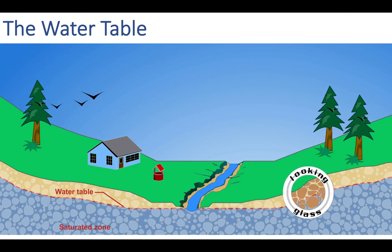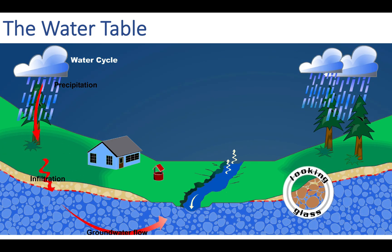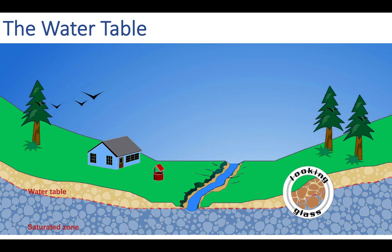The last concept to cover is the water table — beneath the surface we walk on there is a level of water stored underground called the water table. If you've ever dug in sand at the beach and hit water, that's the water table. When precipitation is added, the water table rises closer to the surface. When the sun comes out and evaporation occurs, the water table lowers. During drought, when water dries up and evaporates, the water table falls.